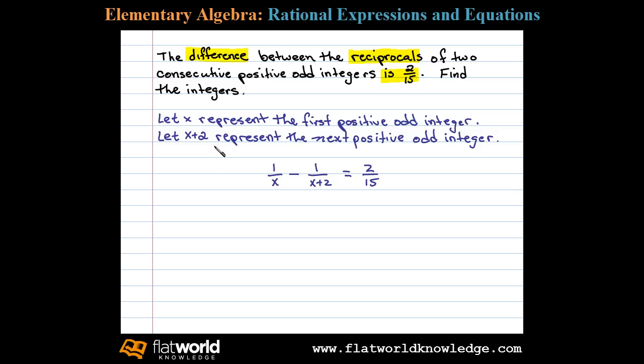Since X is the smaller of the two odd integers, its reciprocal will be larger than the reciprocal of the next odd integer, so this difference will be positive. Let's next identify the LCD. The LCD is 15 times X times X plus 2.